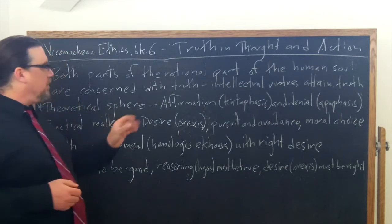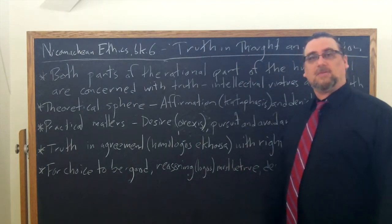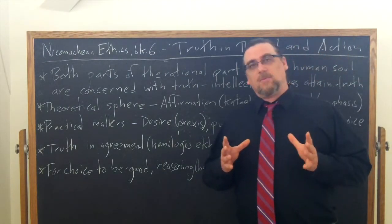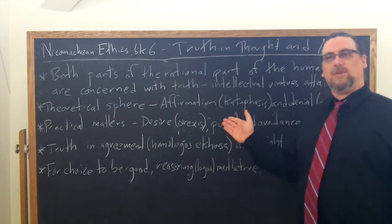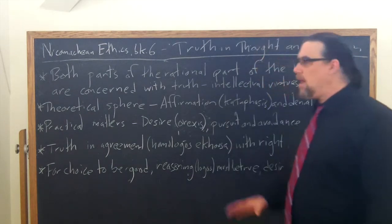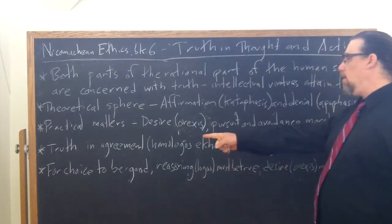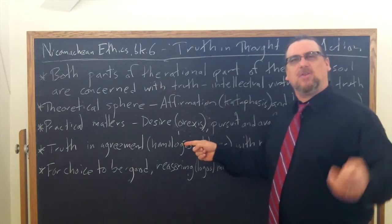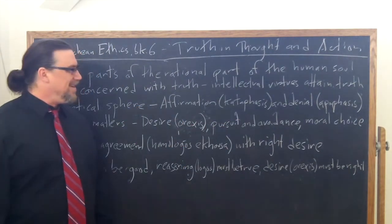So what is truth then? For the theoretical intellect, truth is a conformity between the thought or the verbalization and the state of affairs. In terms of practical matters, Aristotle instead is going to talk about something more complicated. It's not so simple as just the endpoint of desire or aversion — pursuit or aversion, turning towards something or turning away from it, what we happen to feel. This is where the element of choice comes in. Truth needs to be in agreement — homologos echousa — holding itself in a structured way in relation to, mapping onto, right desire. Orexis orthe — it's feminine in Greek.